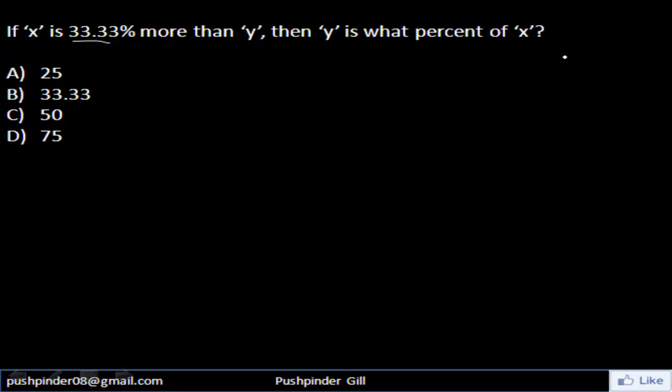This is a very easy question if you have gone through my video of percentages concept. So x is 33.33% more than y. That means x is equal to y. However, it's 33.33% more than y. So this is the equation that we have got here that x is equal to y but it's 33.33% more than y.